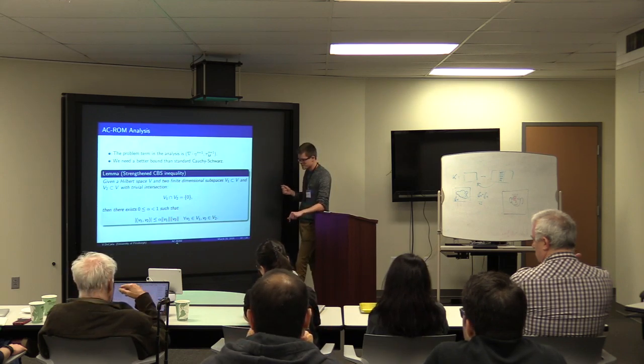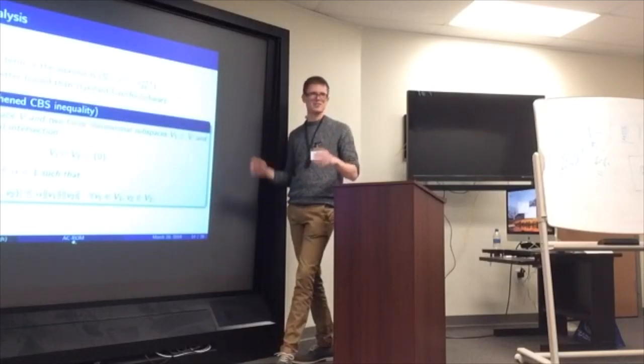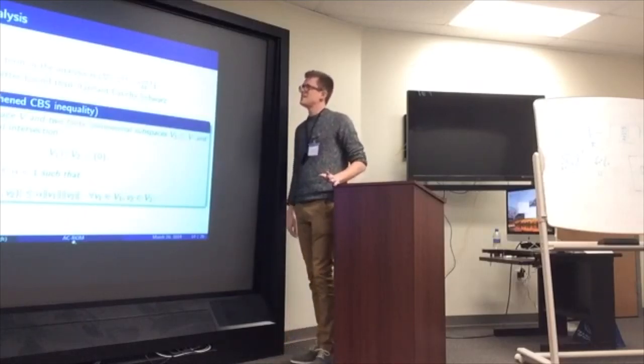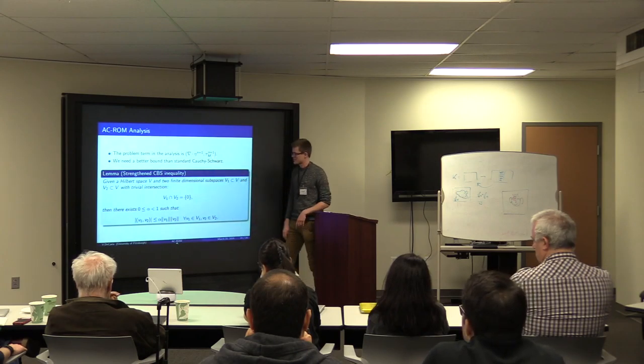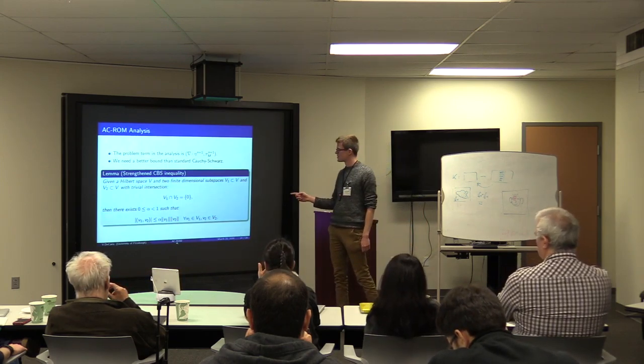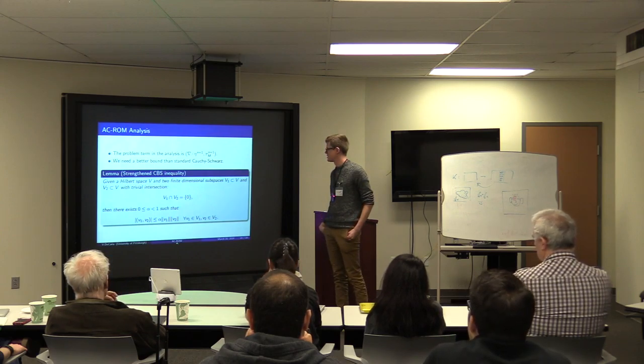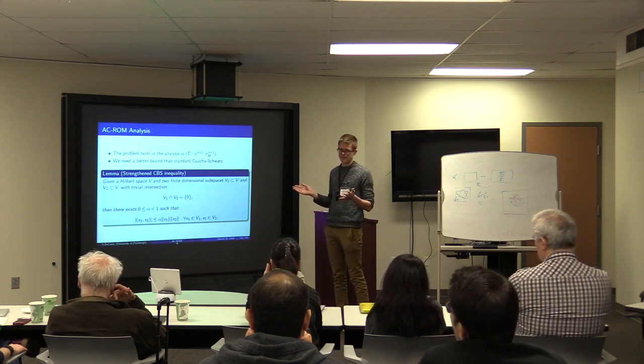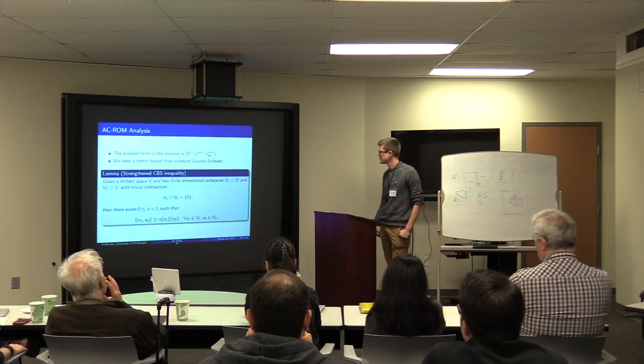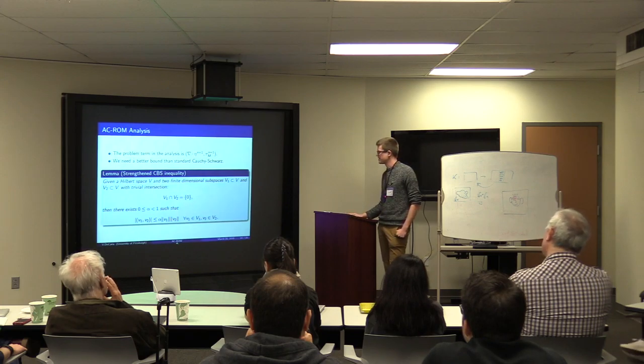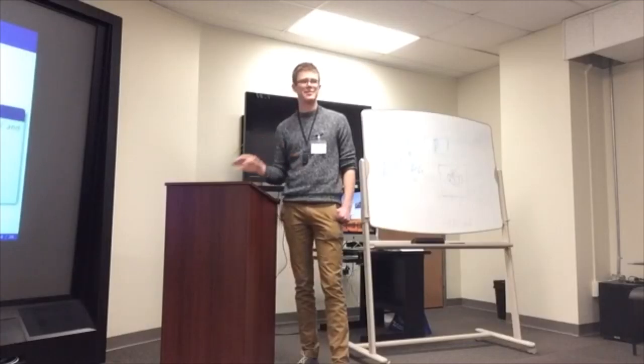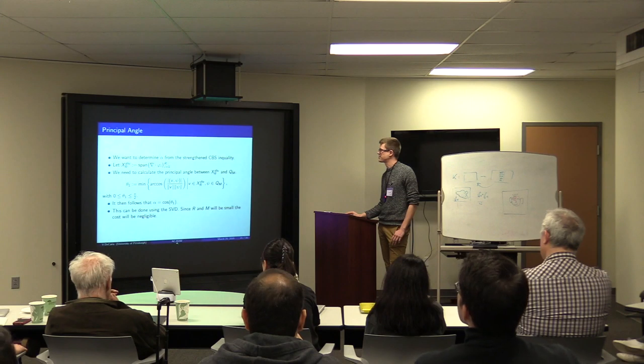In the error analysis we typically decompose things into the interpolation error. So this is basically the best approximation of the POD basis, how well it approximates the true velocity, and then the best approximation minus the POD function that we actually compute. And the problem term, this delta t to the minus one, is multiplied by this term—the divergence of the interpolation error dotted with basically the pressure error. So the standard thing to do in analysis is just do Cauchy-Schwarz, but this is a very pessimistic way to do it.